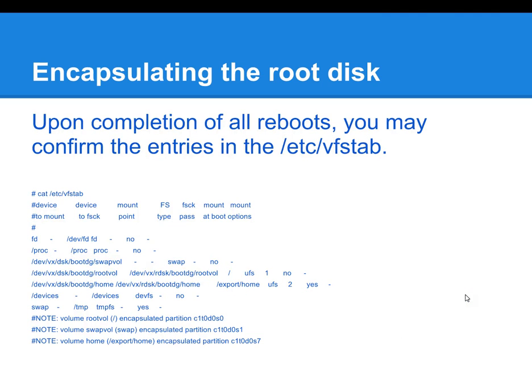Here I actually cat'd /etc/vfstab. For those who are not aware, the location for the file systems as well as the options for mounting those file systems are stored there — the file system configurations are stored in /etc/vfstab. In this example, the server has already rebooted several times and we can now see our file systems or volumes have been encapsulated and noted to /etc/vfstab.